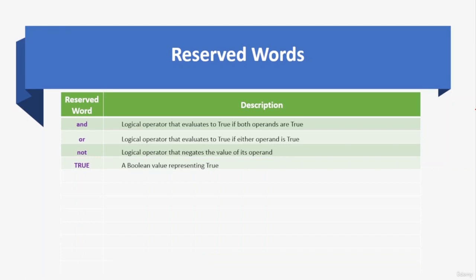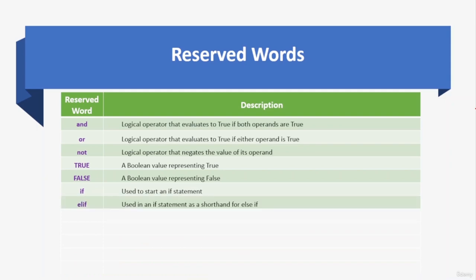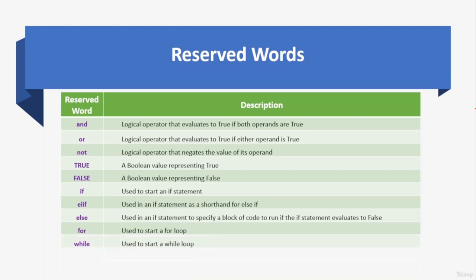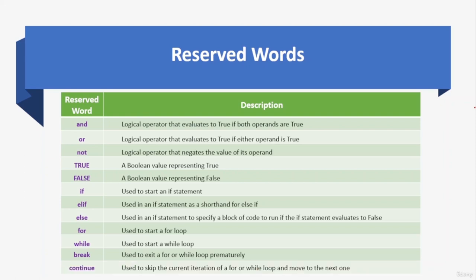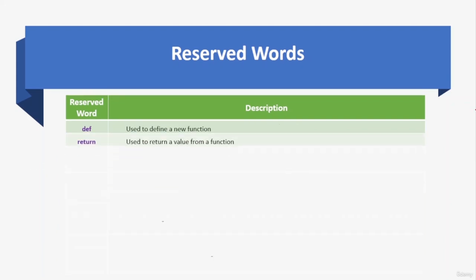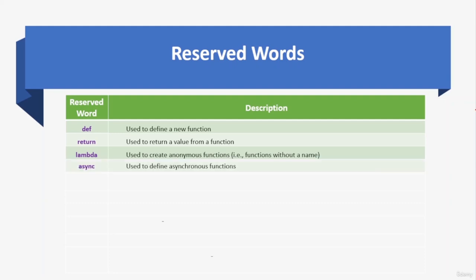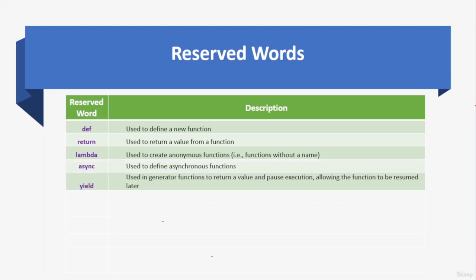'True' and 'False' are boolean values. 'If' starts an if statement; 'elif' is shorthand for else-if; 'else' specifies a block of code to run if the if statement evaluates to false. 'For' starts a for loop; 'while' starts a while loop; 'break' exits a for or while loop prematurely; 'continue' skips the current iteration and moves to the next one. 'def' defines a new function; 'return' returns a value from a function; 'lambda' creates an anonymous function; 'async' defines asynchronous functions; 'yield' returns a value and pauses execution in generator functions.